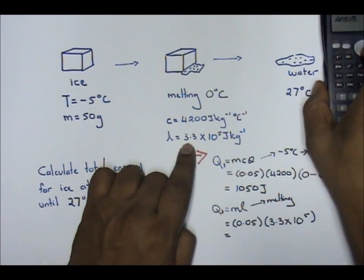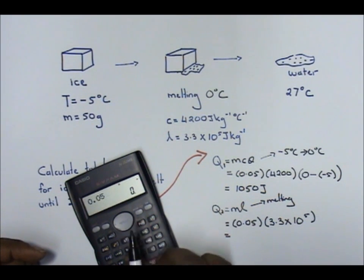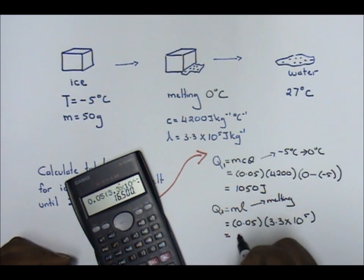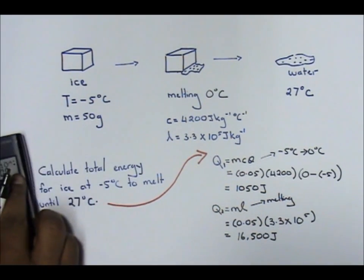Calculate 0.05 times 3.3 times 10 to the power of 5: 16,500 Joules.